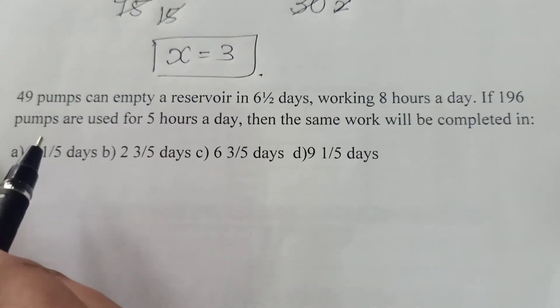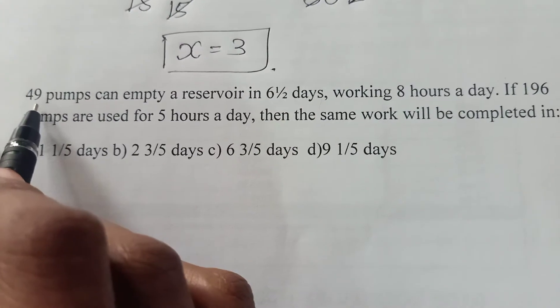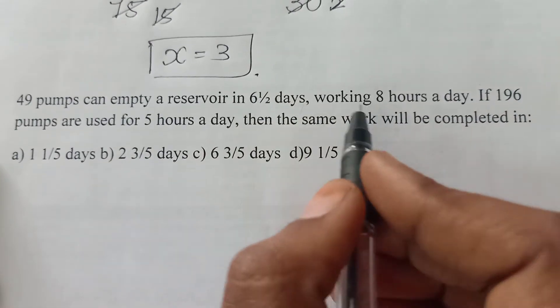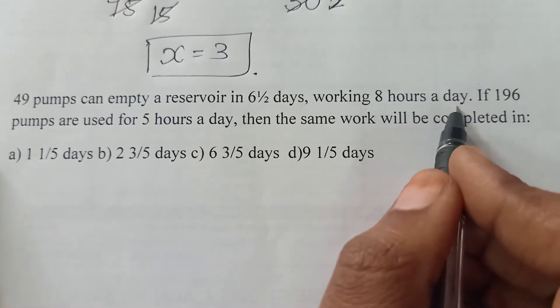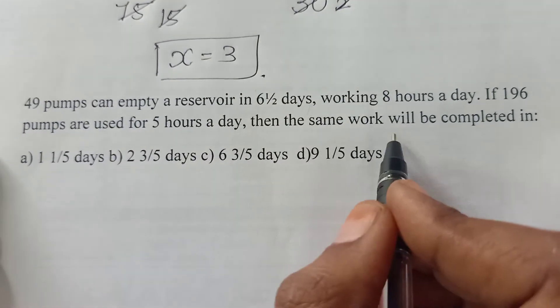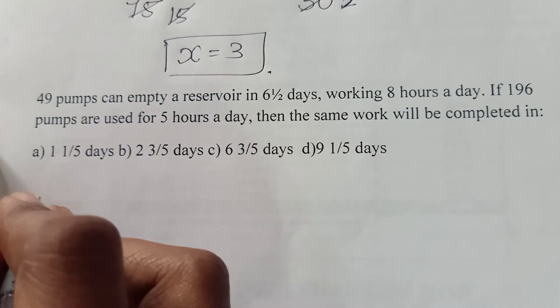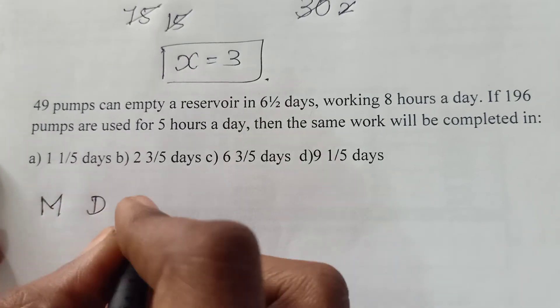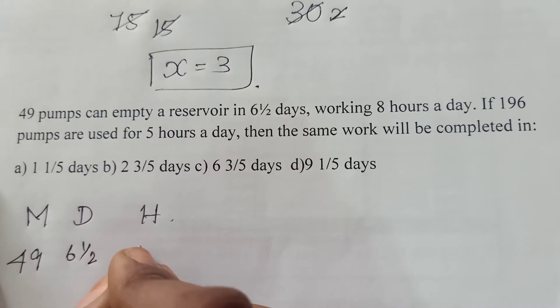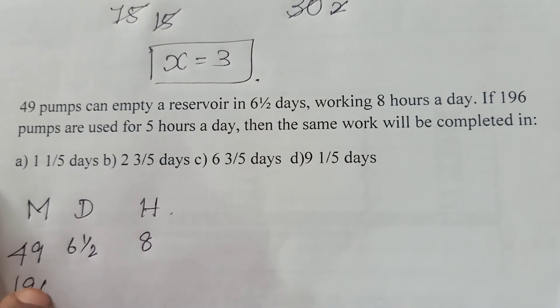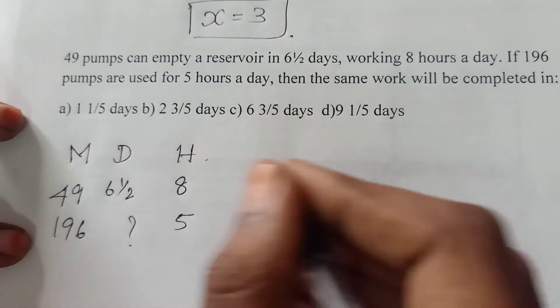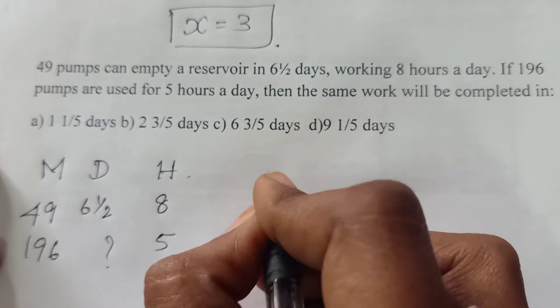We will move to the next question, which is a little bit different. 49 pumps can empty a reservoir in 6 and a half days by working 8 hours a day. If 196 pumps are used for 5 hours a day, then the same work will be completed in... So here also, men, days, hour is given. 49 pumps, 6 and a half days, 8 hours is given. 196 pumps, 5 hours a day. Number of days is unknown.